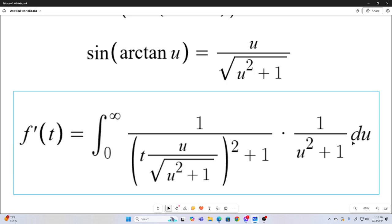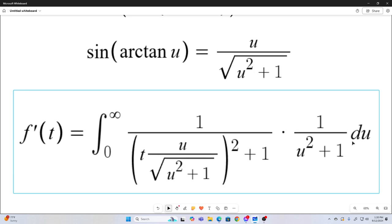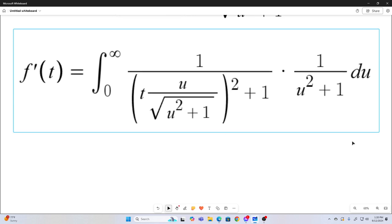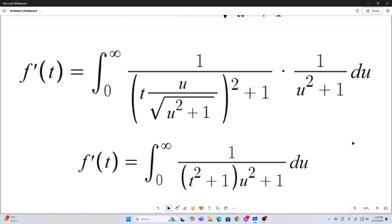And that seems pretty nasty. But I mean, there's some nice simplifications that you can do here. And in the end, you'll end up with this. Our f prime of t is equal to the integral from 0 to infinity of 1 over t squared plus 1 u squared plus 1 du.